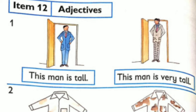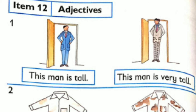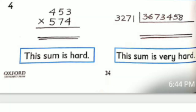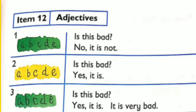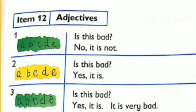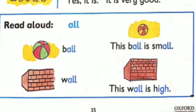Item 12 — Adjectives with 'very'. This man is tall. This man is very tall. This shirt is dirty. This shirt is very dirty. This man is old. This man is very old. This sum is hard. This sum is very hard. Is this bad? No, it is not. Is this bad? Yes, it is. Is this bad? Yes, it is very bad. Is this good? No, it is not. Is this good? Yes, it is. Is this good? Yes, it is very good. Read aloud: double L — ball, wall. This is a small ball. This wall is high.